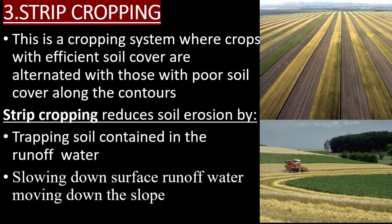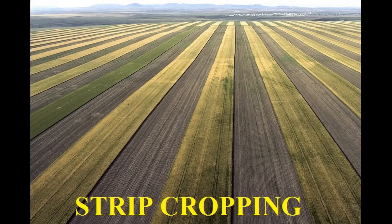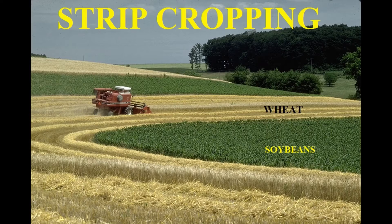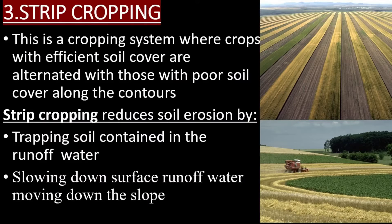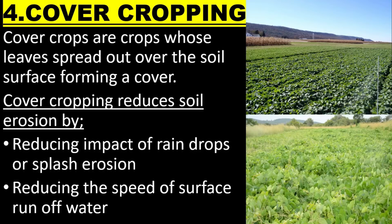Strip cropping is a cropping system where crops with efficient soil cover are alternated with those with poor soil cover along the contours. Strip cropping reduces soil erosion by trapping soil contained in the runoff water and slowing down surface runoff water moving down the slope.